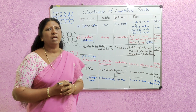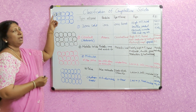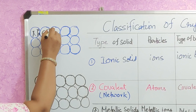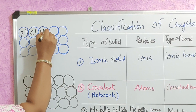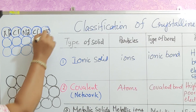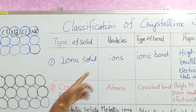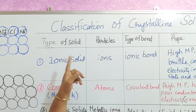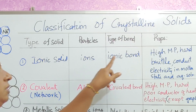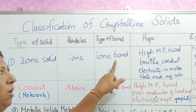The first classification: if the particles are ions, that type of solid is called ionic solid. The constituent particles are ions, and the force of attraction is called ionic bond.